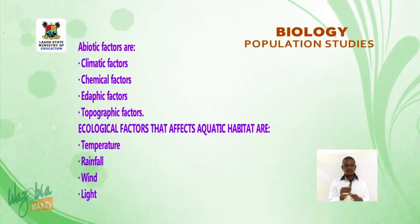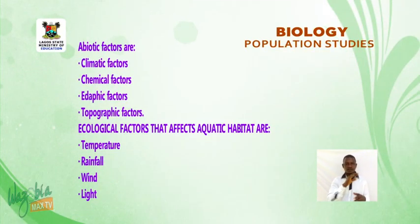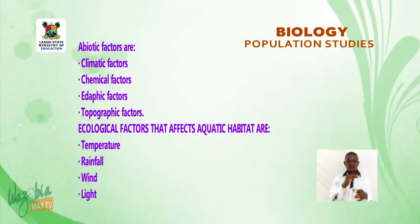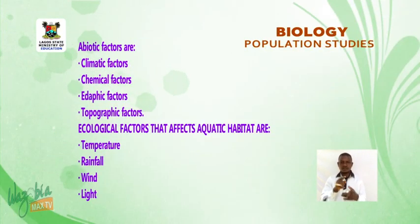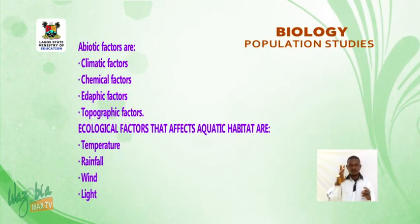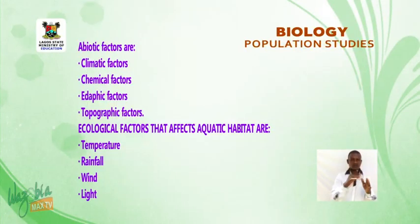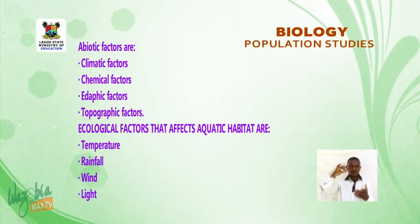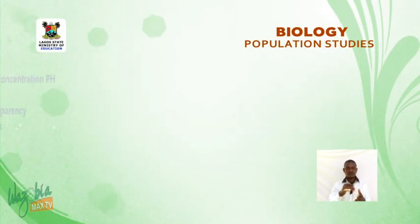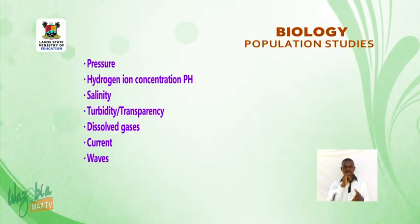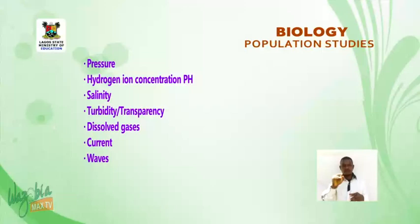Ecological factors that affect terrestrial habitats include: temperature, rainfall, wind, light, pressure, and hydrogen ion concentration.